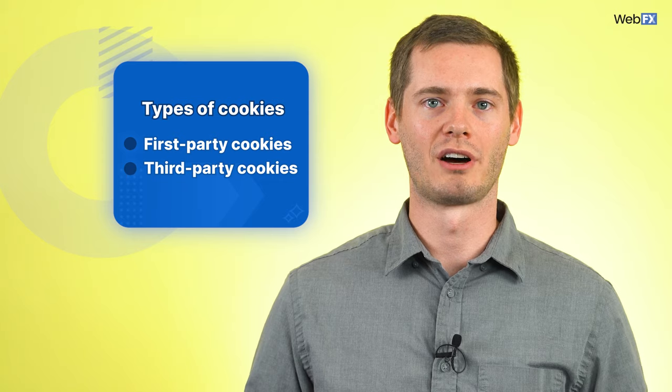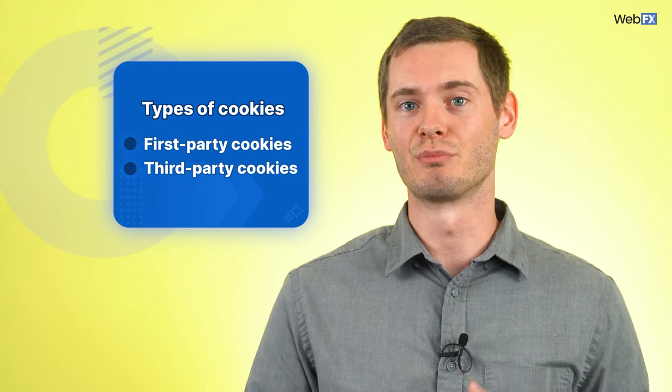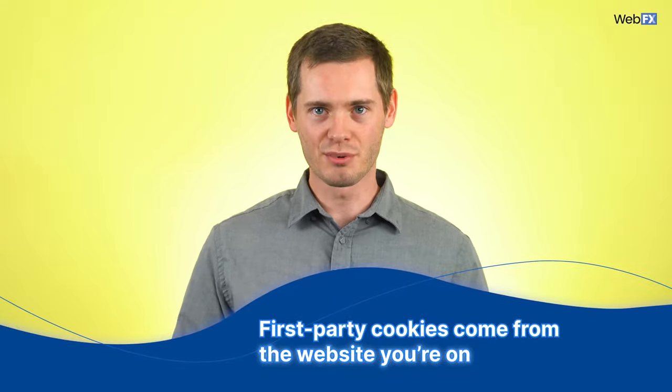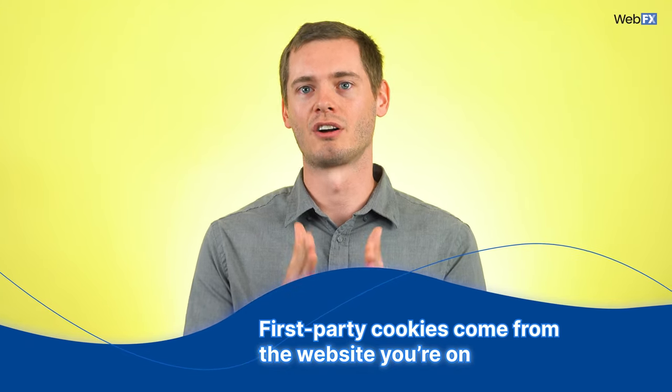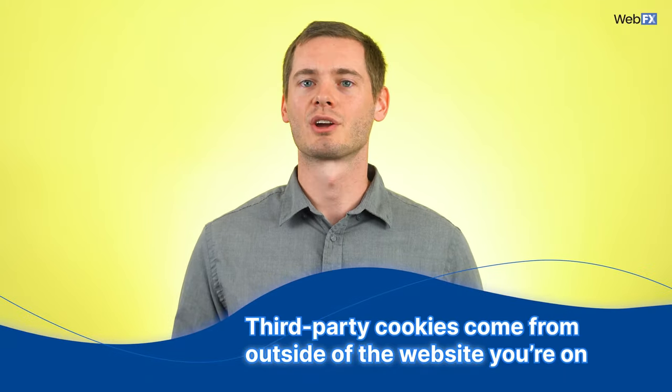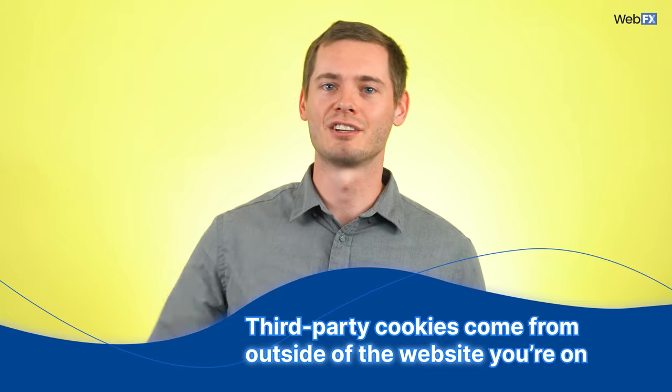Two types of cookies you should know about are first-party cookies and third-party cookies. First-party cookies come from the website you are on. They allow the business behind that website to gather analytics about users and remember information, like login details and user preferences. Third-party cookies come from somewhere outside of that website you're on, like an advertising platform. These advertising cookies can track your behavior while you surf the web. They help businesses craft ads specific to their target audiences based on what they've done online.